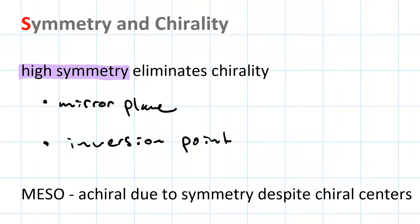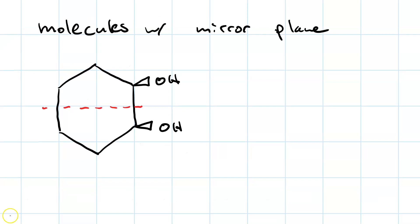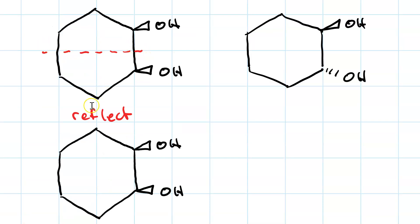Let's have a look at some examples of a mirror plane. This molecule clearly has a mirror plane, which is horizontal here. If you rotate through that plane, you'll get a hydroxyl group here on a wedge and a hydroxyl group here on a wedge. So we take this molecule and reflect it through this mirror plane, and this is what we see — indistinguishable from the original. Now, if we do that with this molecule, we'll see its enantiomer.